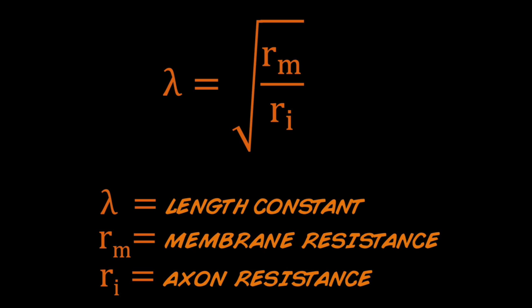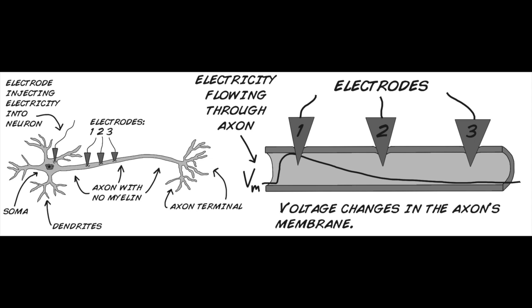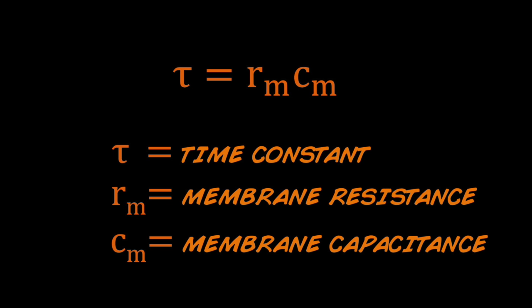Let us visit our beloved cable theory equations. There are two constants that are important in determining conduction velocity. The first, the length constant, is a measure of how far a voltage change at one point in an axon travels down the axon before it decays to zero. The second, the time constant, is a measure of how much time it takes for a neuron to fully charge and reach a new stable voltage if current begins flowing across the neural membrane.